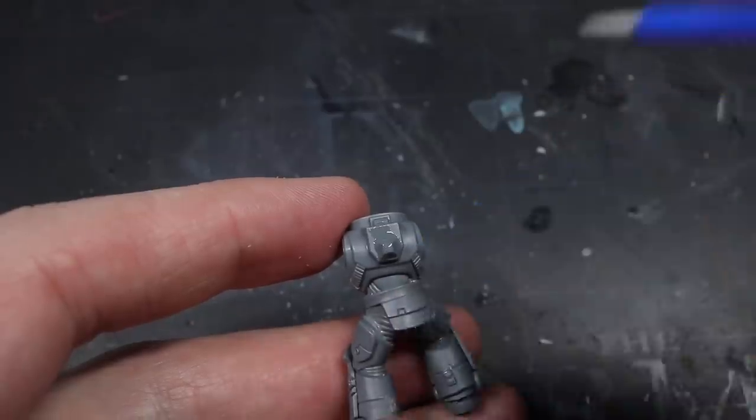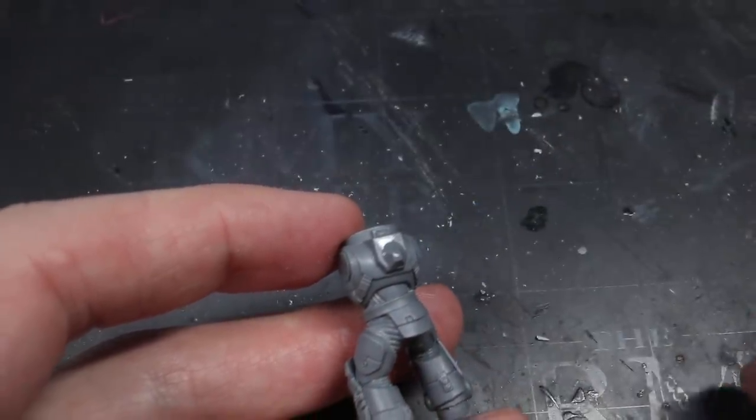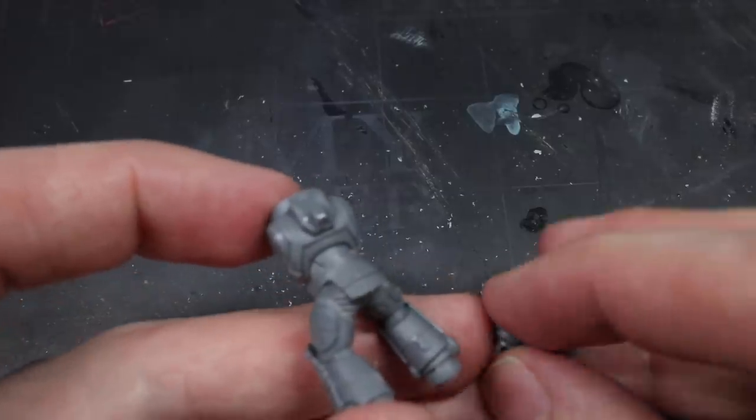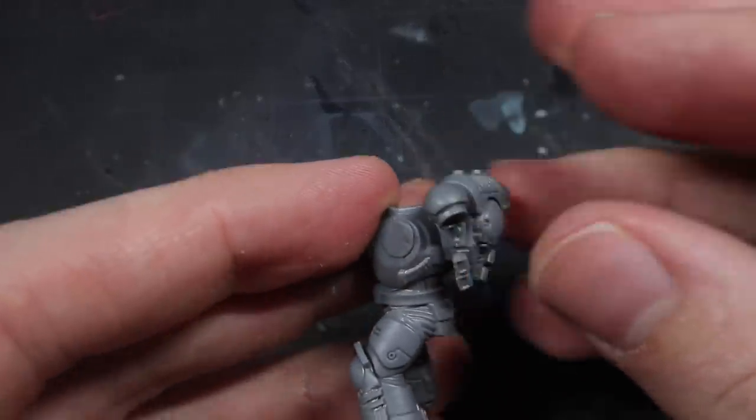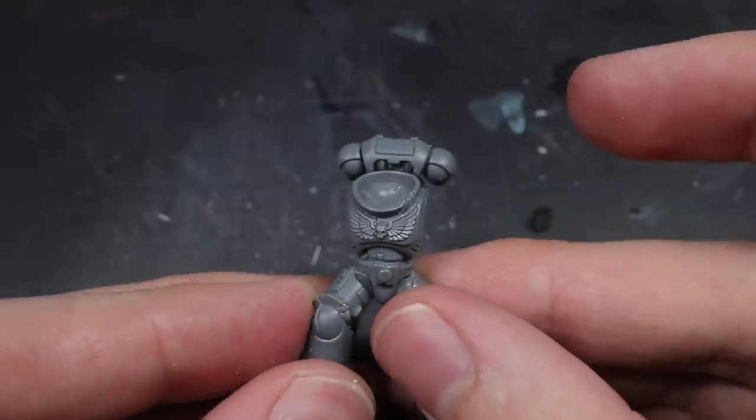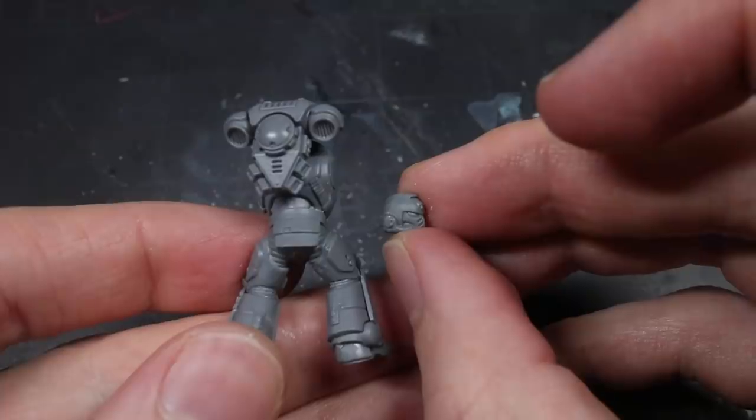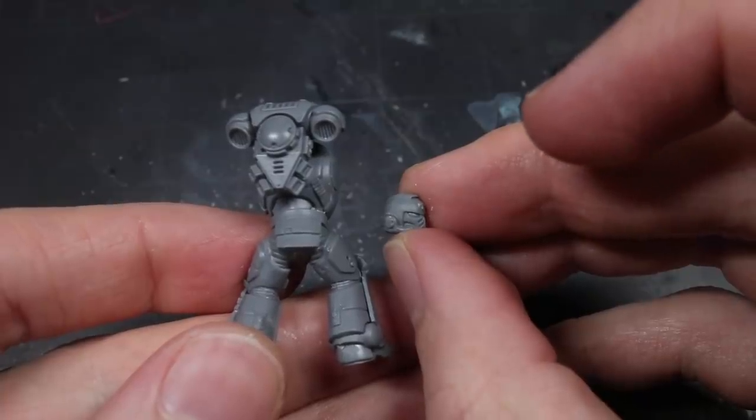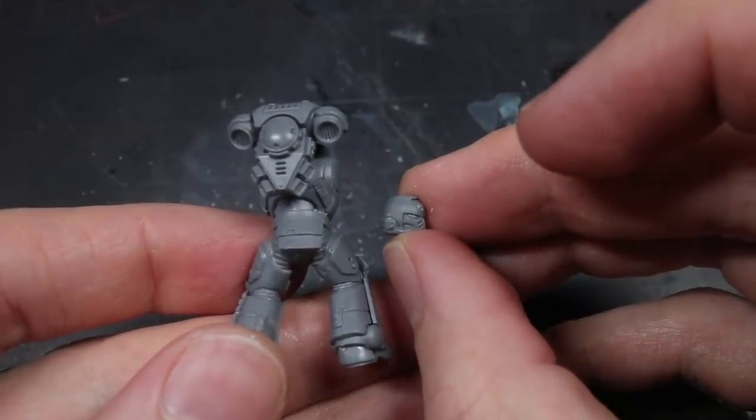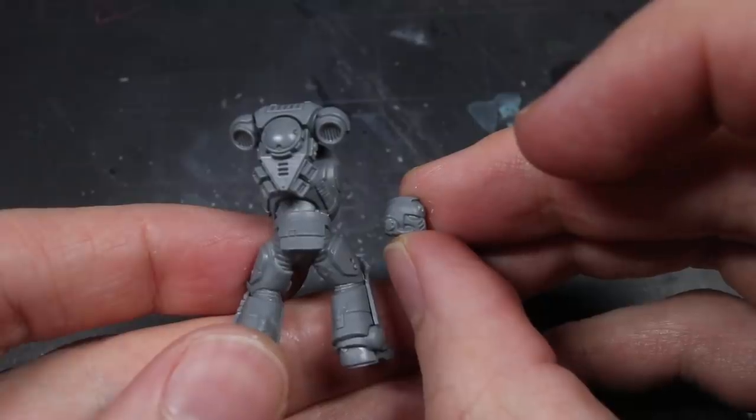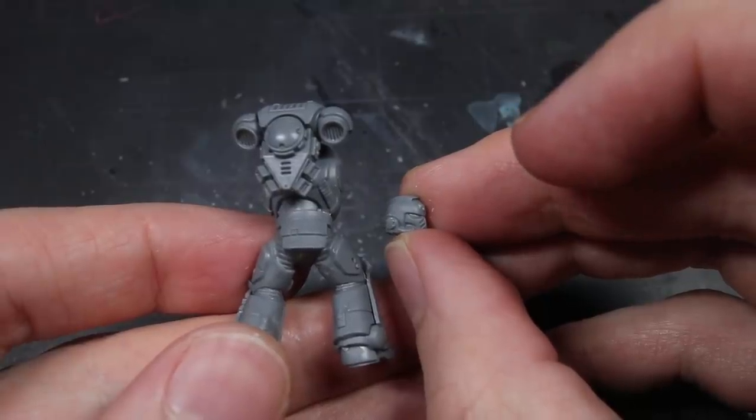Next up was the power pack. This didn't have any modifications and was just taken straight from the intercessor kit. However, I did actually glue this component to the torso, due to it sharing the same armour colour as both the torso and the legs. I would also be attaching the spare helmet from the intercessor kit but, again, due to this having the wine red colour, it would be painted separately and so wasn't glued just yet.